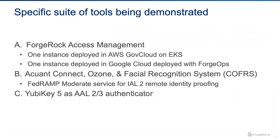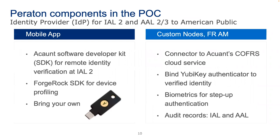This slide talks about some of the specific tools residing in the AWS GovCloud environment. The ForgeRock access management instance is running on EKS — just one instance, deployed with four pods. That system communicates with an identity verification service provider: Accuant's Connect product, which is a FedRAMP Moderate service for identity assurance level 2 remote identity proofing capability. When we complete identity proofing, we bind the proofed identity to an authenticator — in this case, we're using the YubiKey 5 series authenticator.